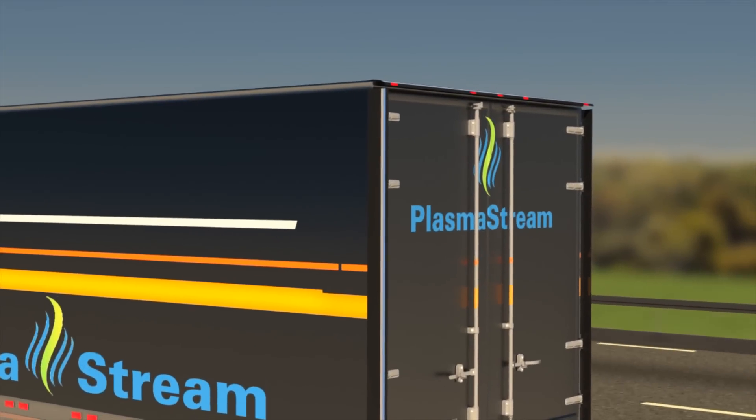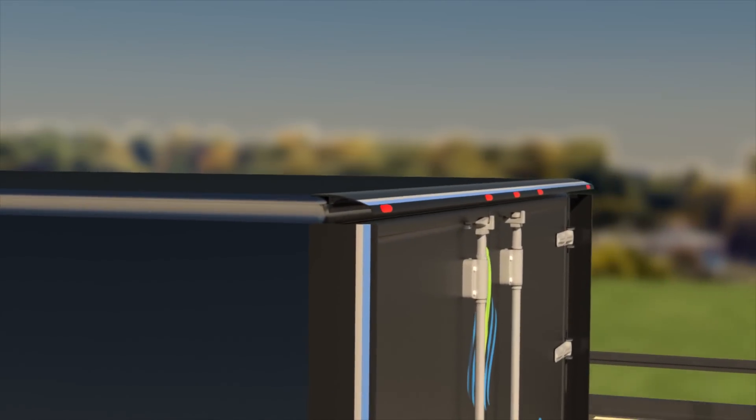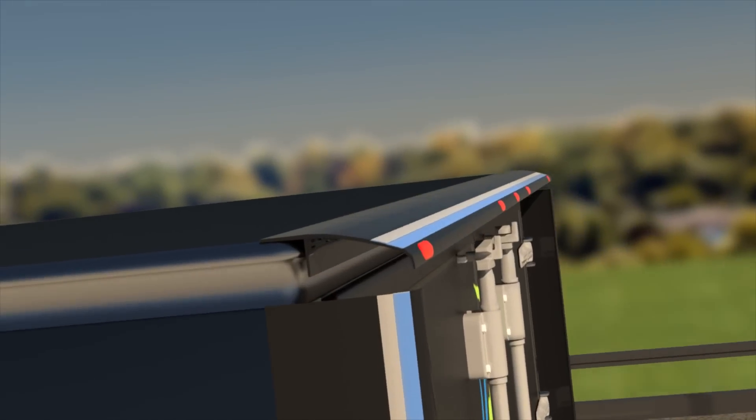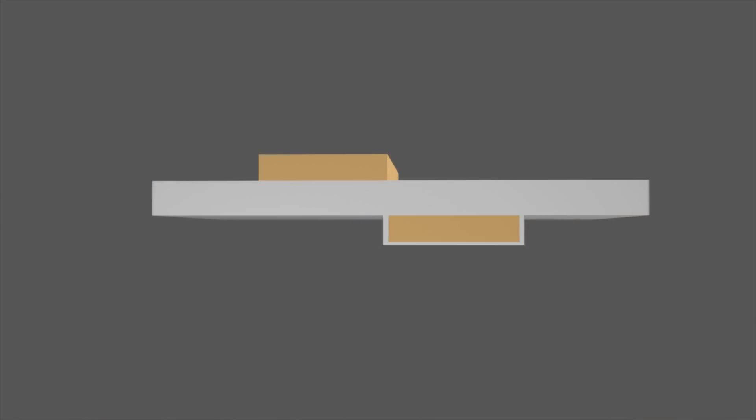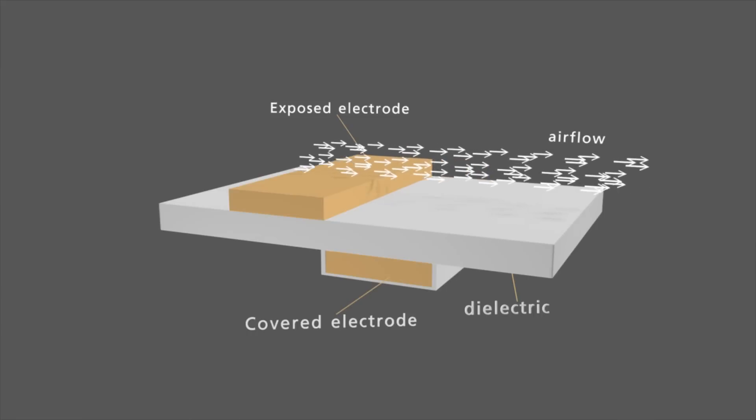To fully understand how PlasmaStream's technology works, we need to take a look into the core of the system which is driven by plasma actuators. Plasma actuator is a three-layer tape that consists of two electrodes made of conductive materials such as copper separated by a dielectric material such as plastic. One of the electrodes is exposed to air, while the other electrode is covered by dielectric material.